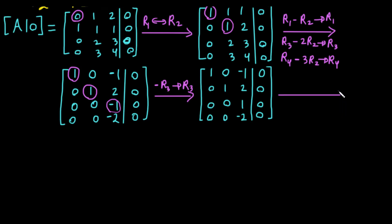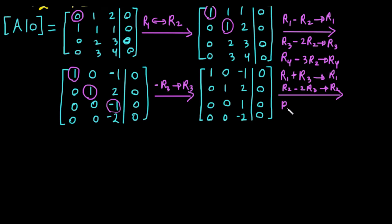Now we perform further row operations to zero out the rest of the third column: row one plus row three into row one (because -1 + 1 = 0), row two minus two times row three into row two, and row four plus two times row three into row four.